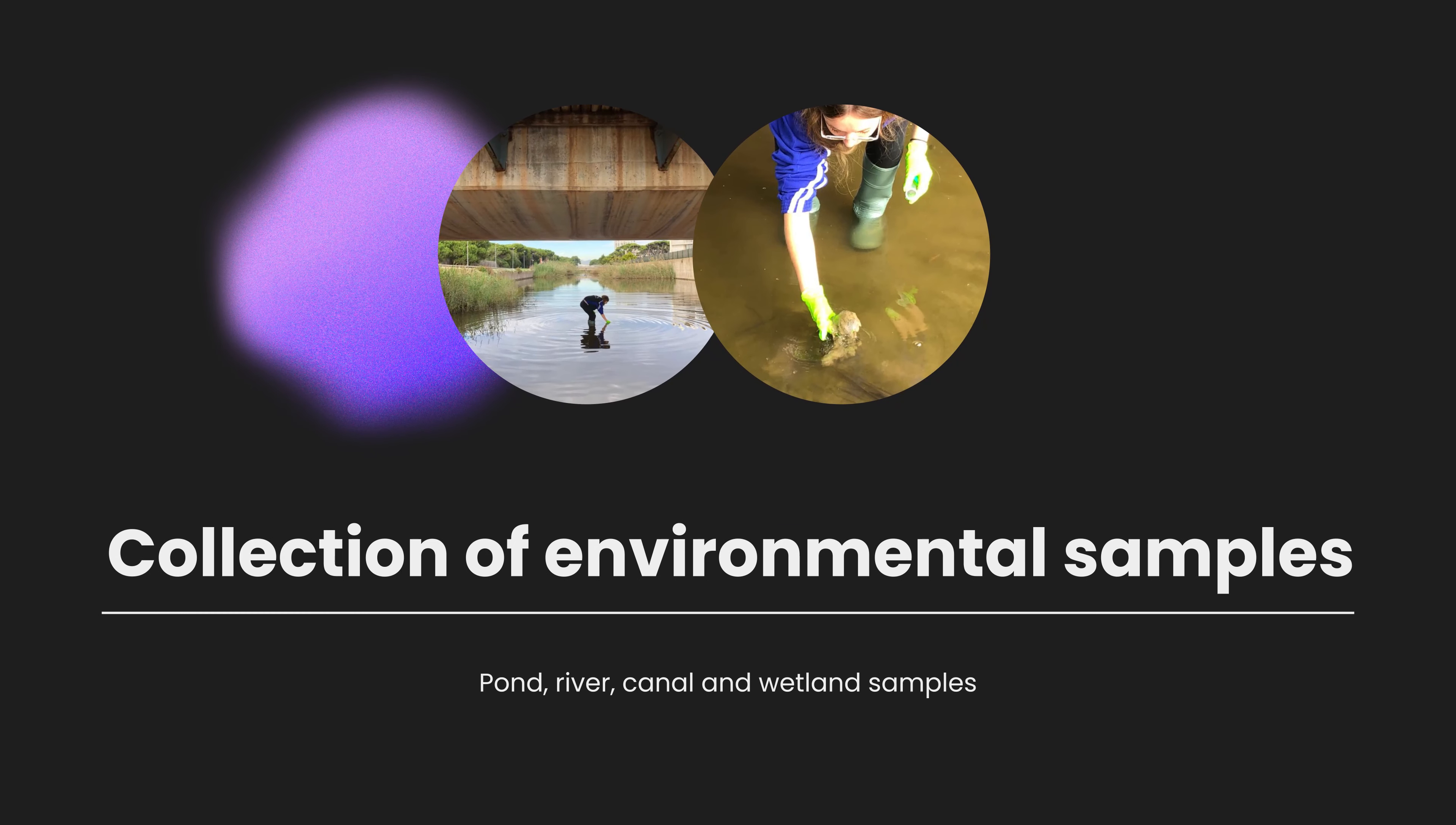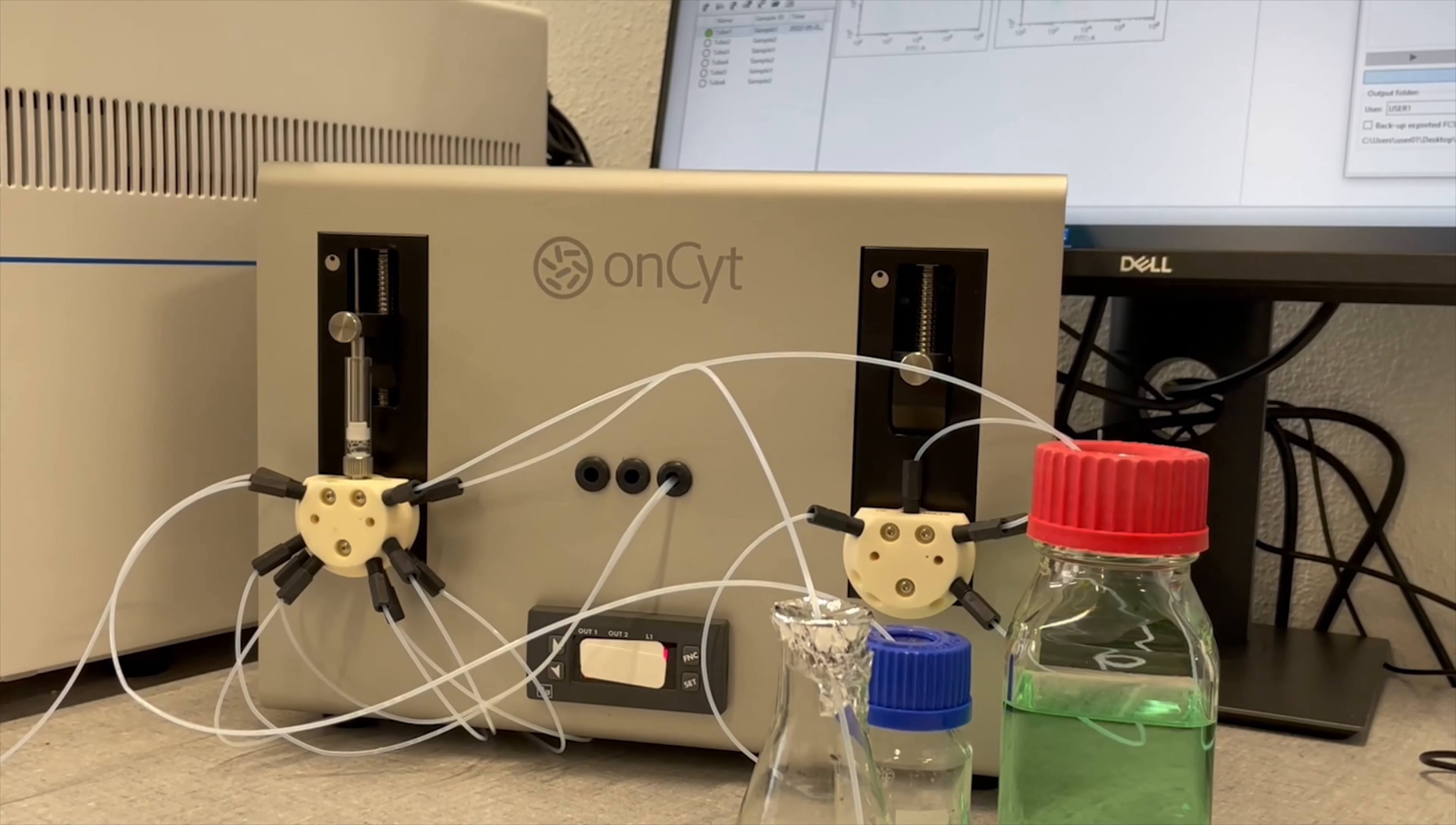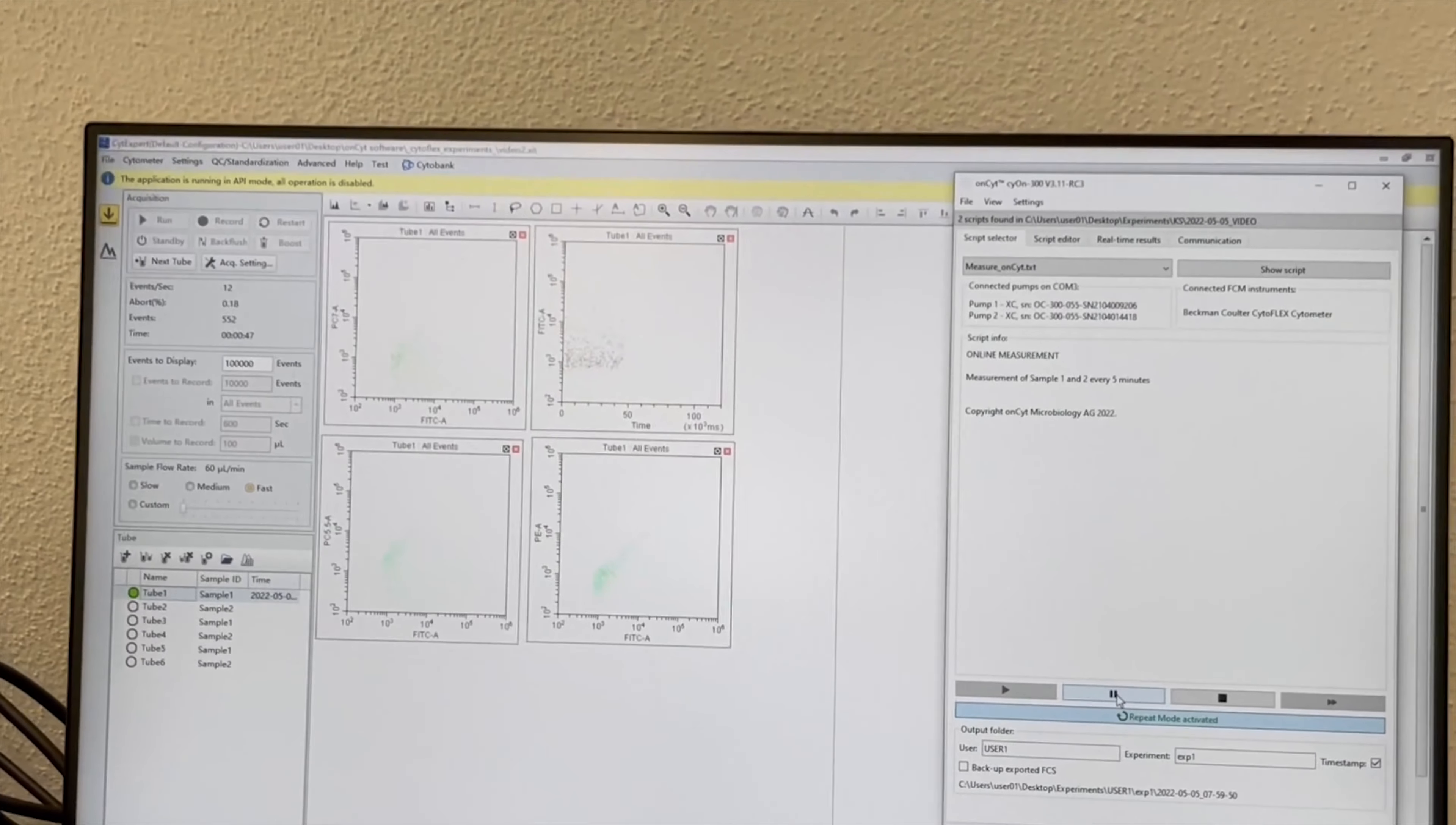Promicon firstly observes and learns how microbes and consortia isolated from nature behave and interact with each other. To achieve this, we develop new analytical and modeling tools and combine them with microbial cultivation technology.